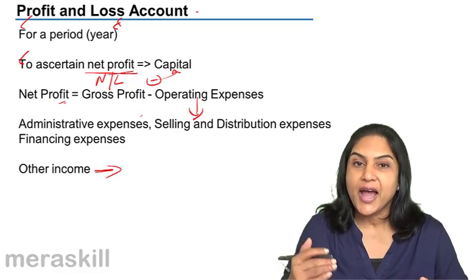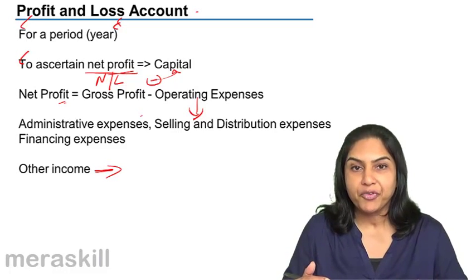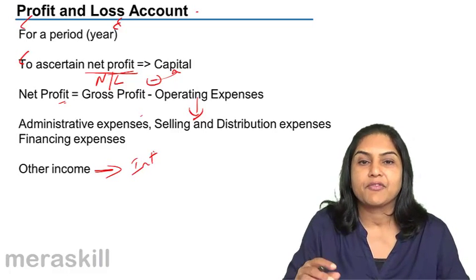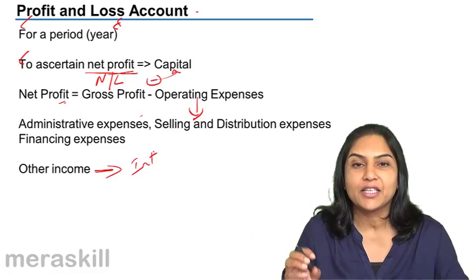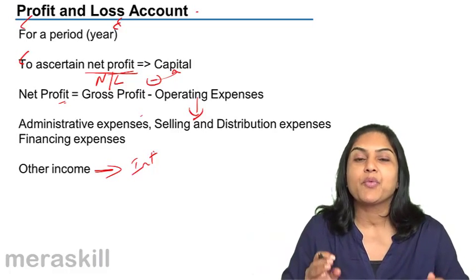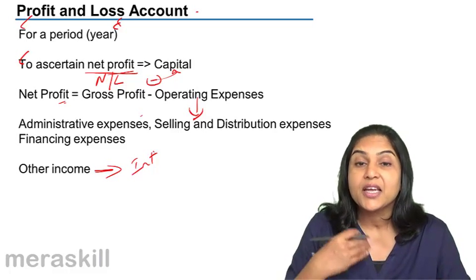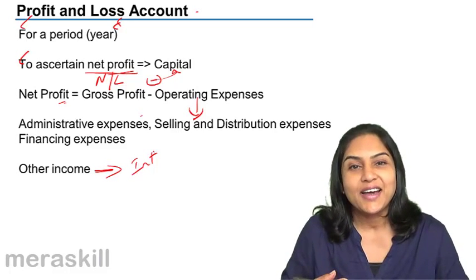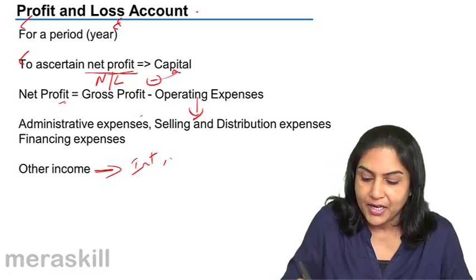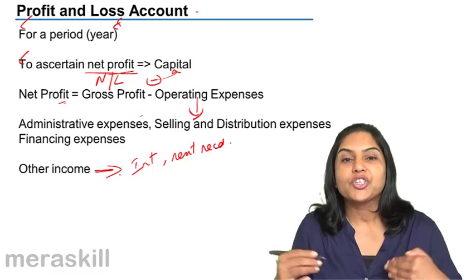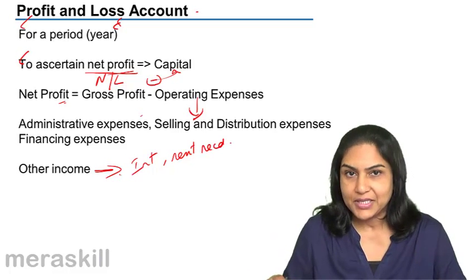Another item which adds to the profit is other income. This may be interest income from investments, or rent received if part of the property is being let out. Interest received, rent received, or other such income adds to the profits of the business and is credited to the profit and loss account.